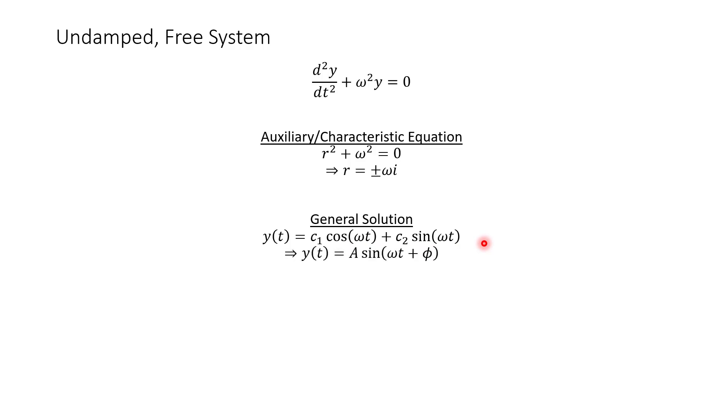And then we actually have another version of this solution. So sometimes you'll write it like the first version, or sometimes you'll write it like our alternative version, which is y equals A sine of omega t plus phi. So that's Greek phi. And then in this case, if you use this second version, c1 and c2 are just A sine phi and A cosine phi respectively.